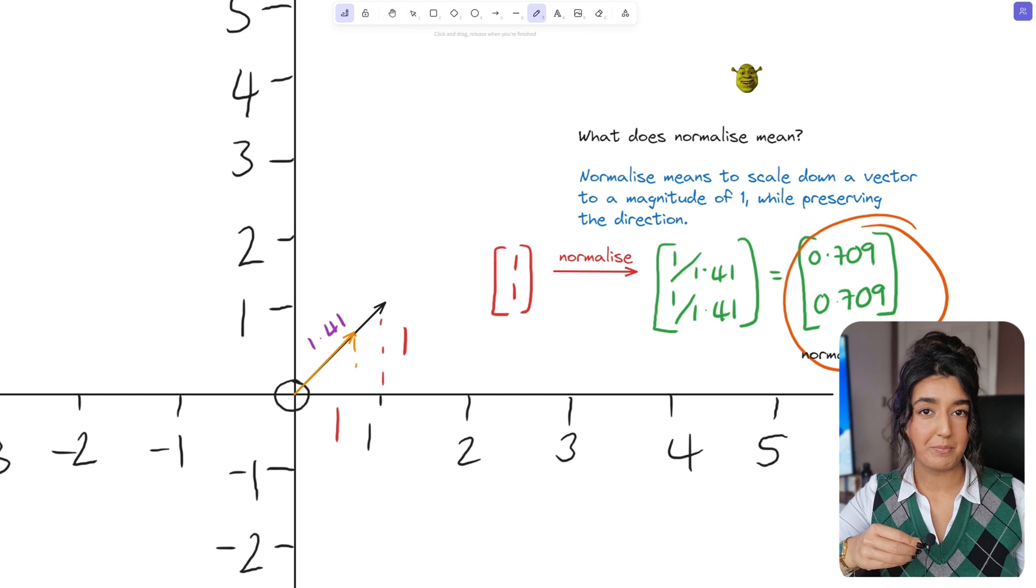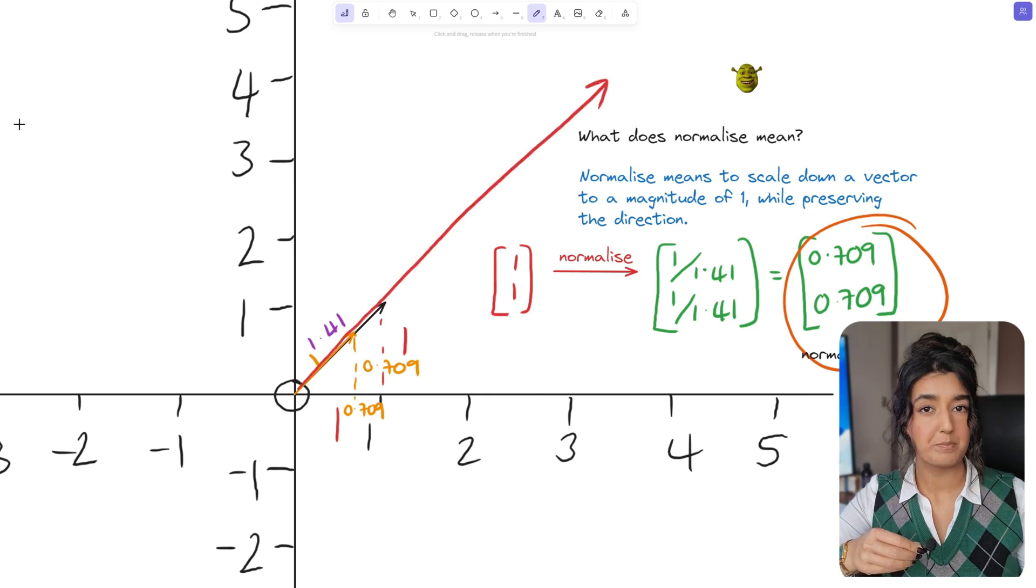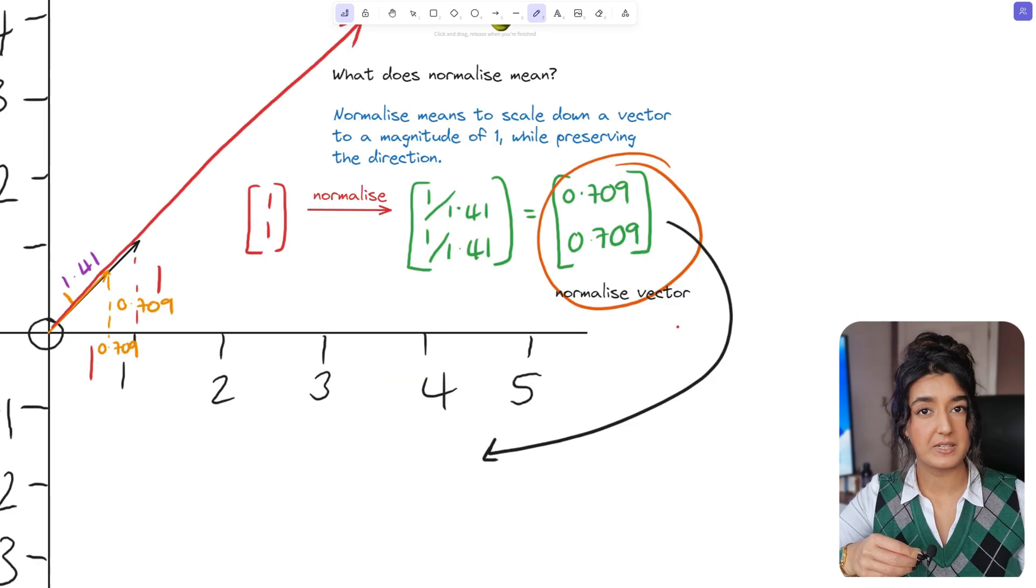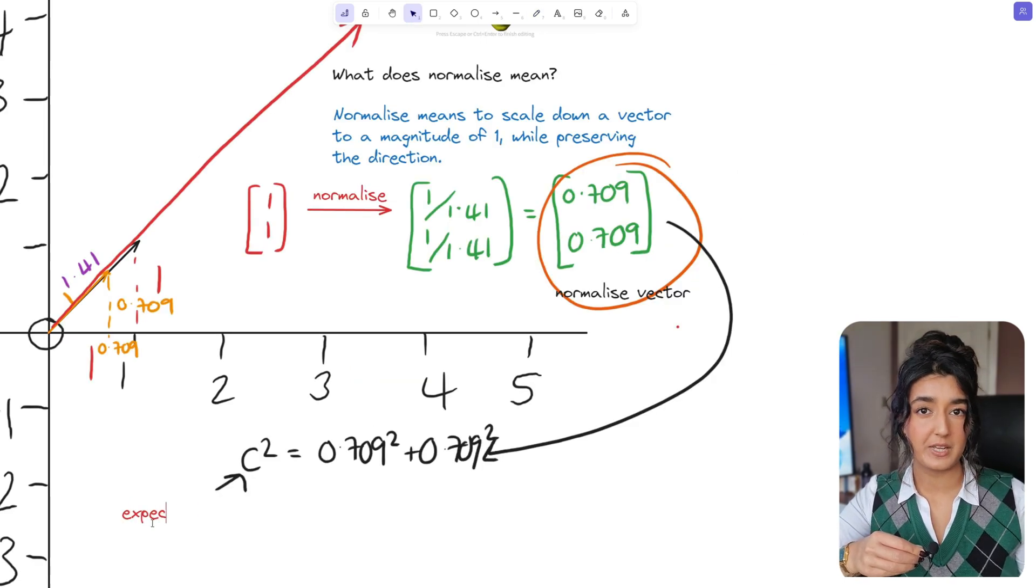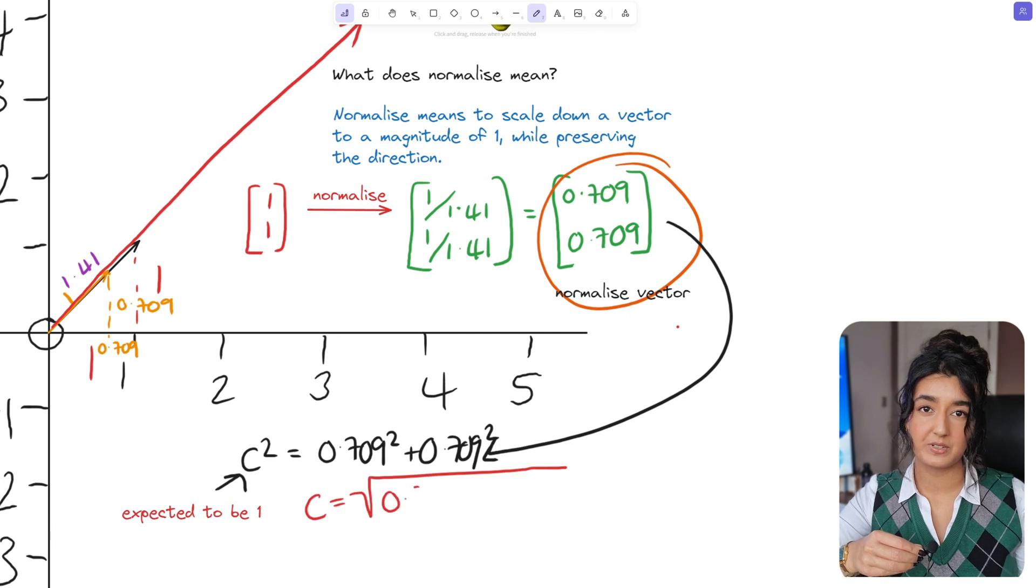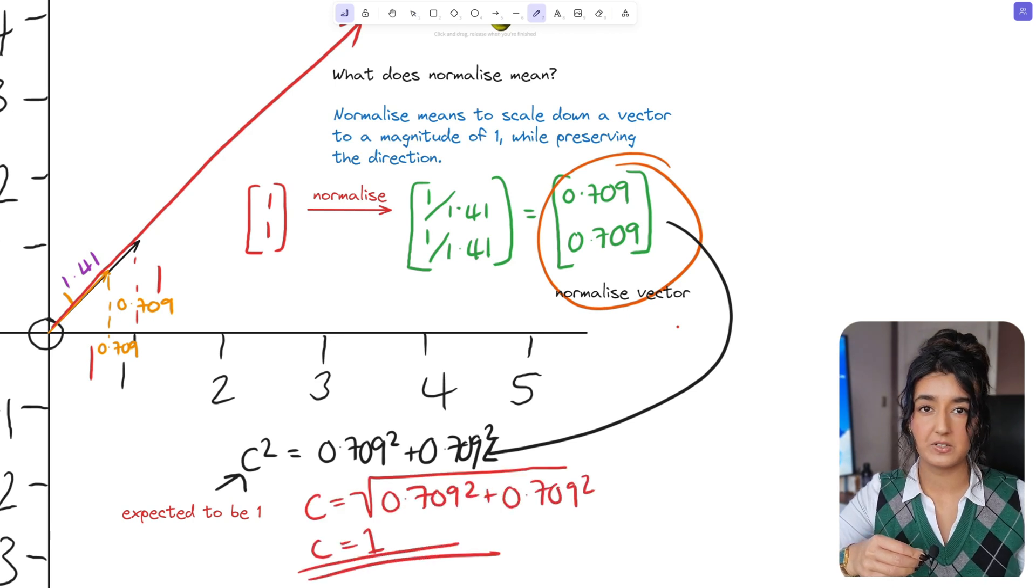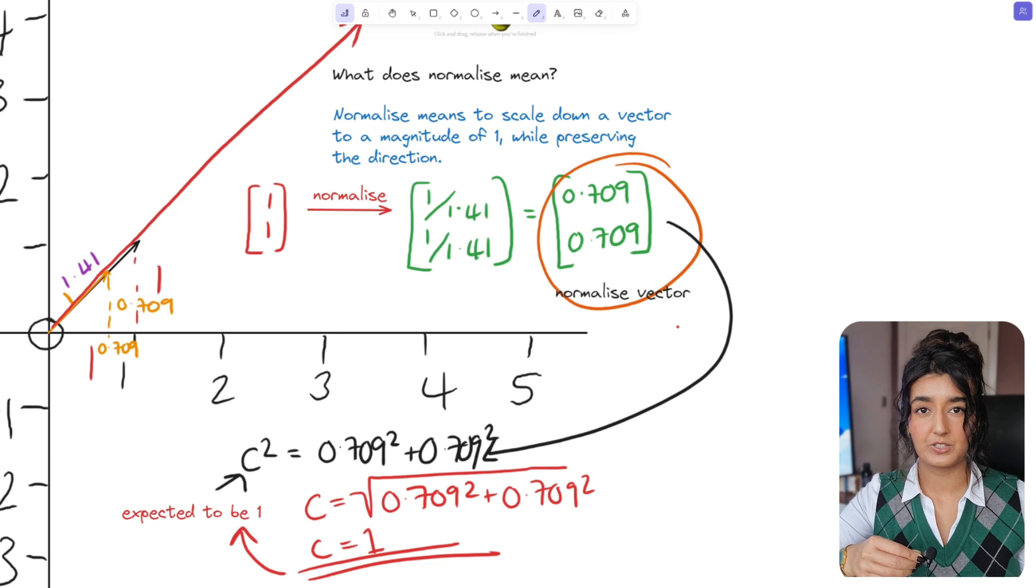Now when we map this onto our graph we can see it has the same exact direction as our input vector originally had but now it has a magnitude of 1. We can put this to the test by solving again using Pythagoras theorem. If we input the values 0.709 and 0.709 and solve we are left with a magnitude of 1.